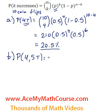So that's actually going to be the probability of getting exactly 4 tails plus the probability of getting exactly 5 tails. This one, we already know it, it's 20.5%. 20.5% probability of getting exactly 4 tails.